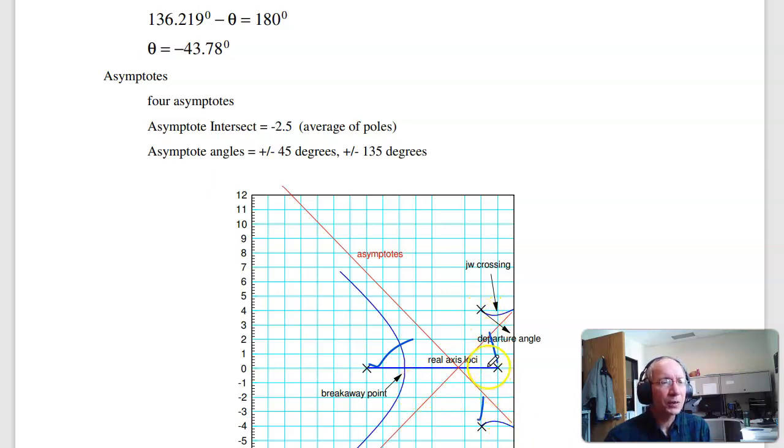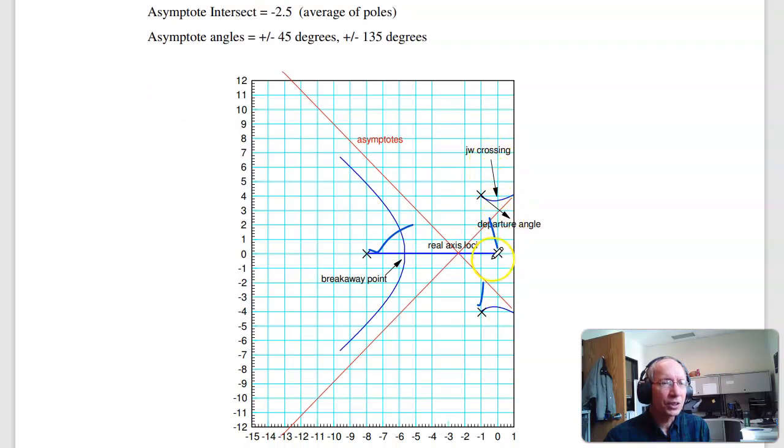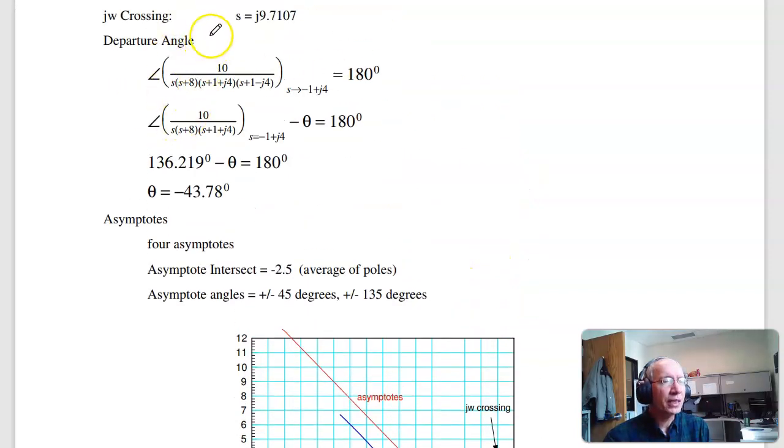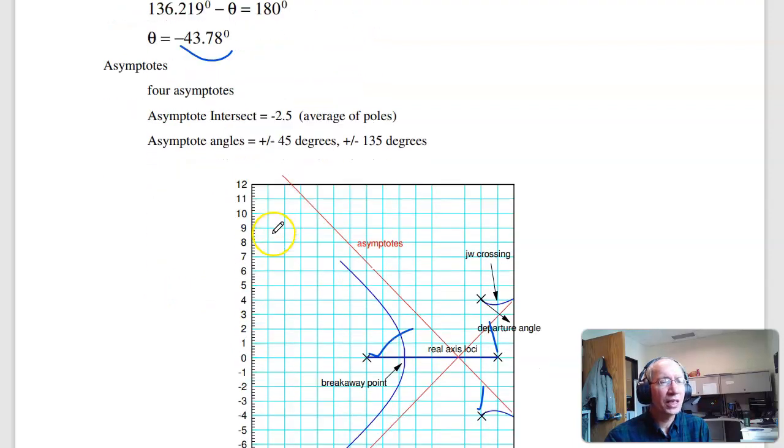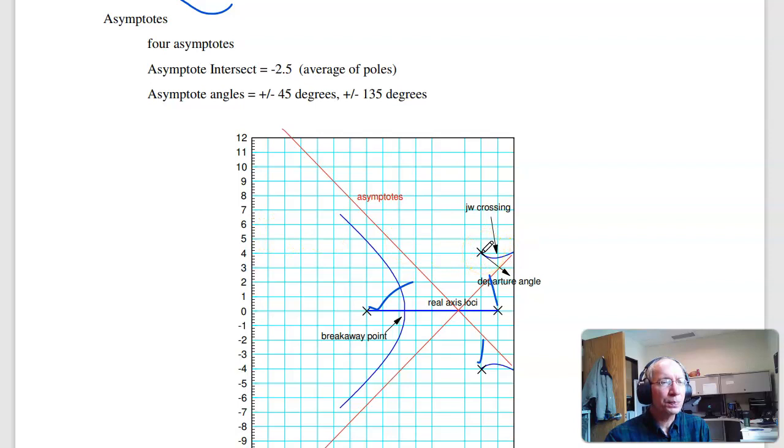So I've got four poles, gives me four asymptotes. Center of mass, j omega crossing. Search until the angles add up to 180. Real axis loci going to that asymptote. Departure angle - to get the departure angle at minus one plus j four, as s approaches that point, angle's 180. This I can't analyze because I get zero, so analyze everything else. Everything else plus this angle, actually minus that angle since I'm dividing, is 180. Solve for theta. I get theta's minus 43 degrees. And that's what you're getting. It's leaving at minus 43 degrees, then goes to the asymptote.